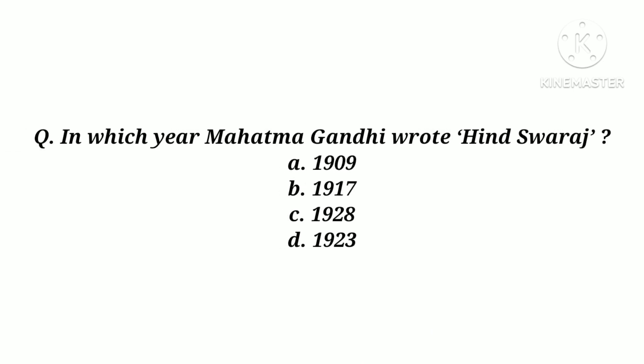In which year did Mahatma Gandhi write 'Hind Swaraj'? Options are: 1909, 1917, 1928, 1923. Answer: 1909.